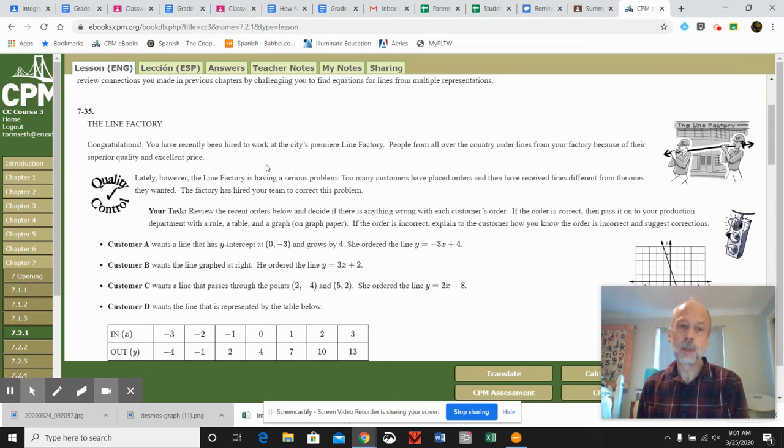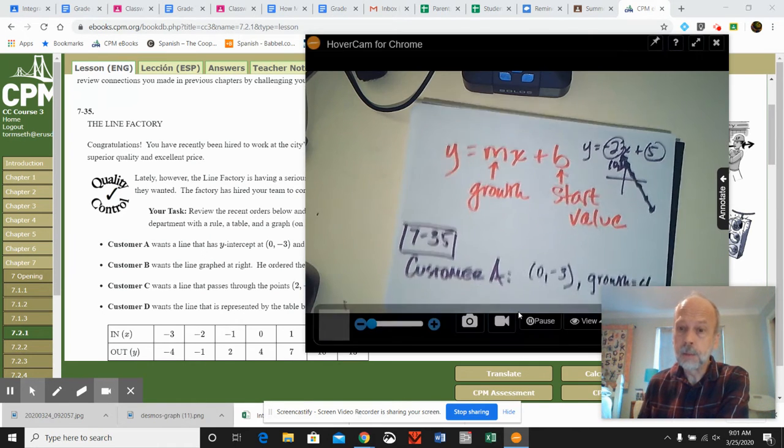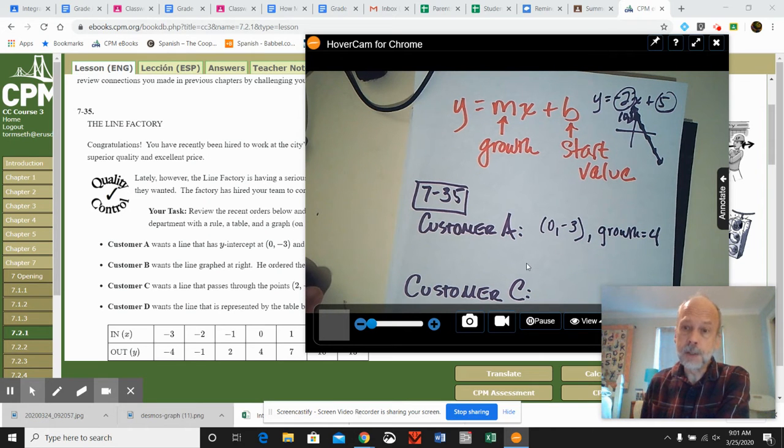So your job in these different equations is to decide whether the order makes sense. If it doesn't make sense, suggest a way to fix it. And if it does make sense, then your job is to create the rule table and a graph. So an example of one that doesn't make sense is customer A. Customer A wanted something with a y-intercept of 0, negative 3, and the growth had to be 4.